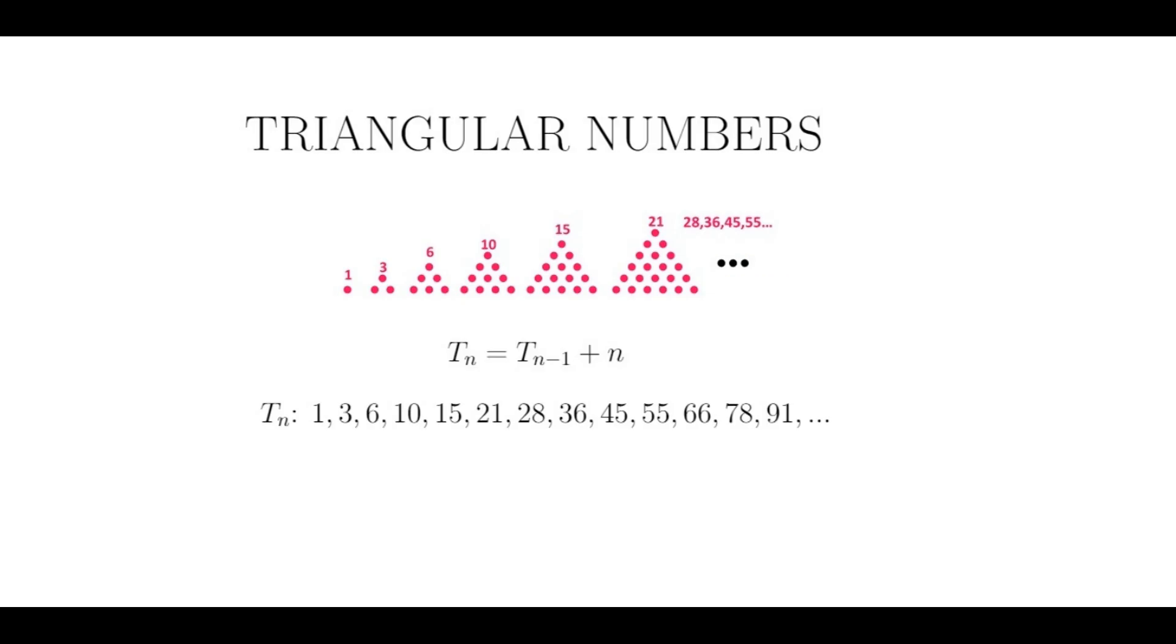Well, the triangle is the simplest polygon, so let's consider the number of objects arranged in an equilateral triangle. I will call Tn the nth triangular number.